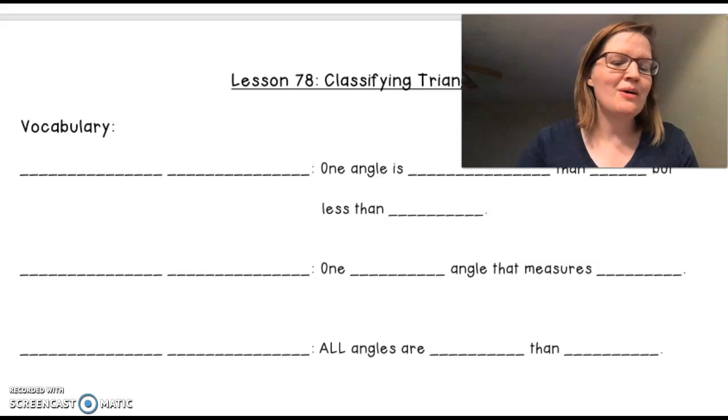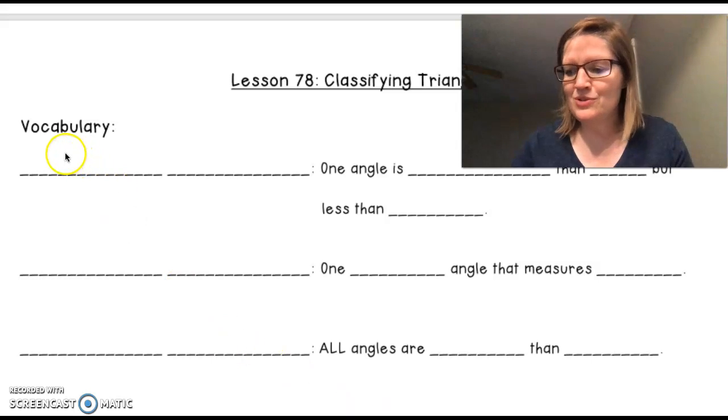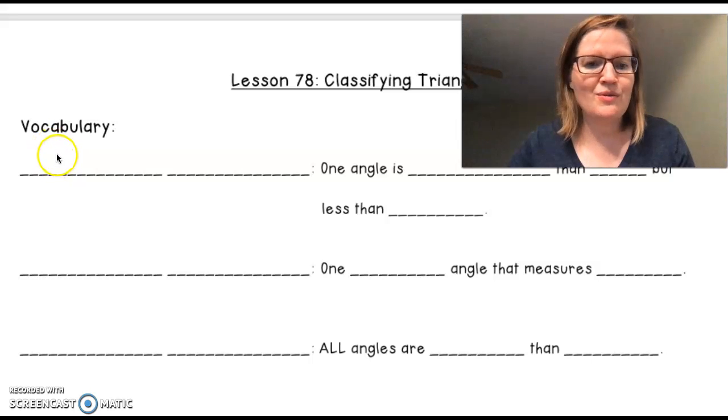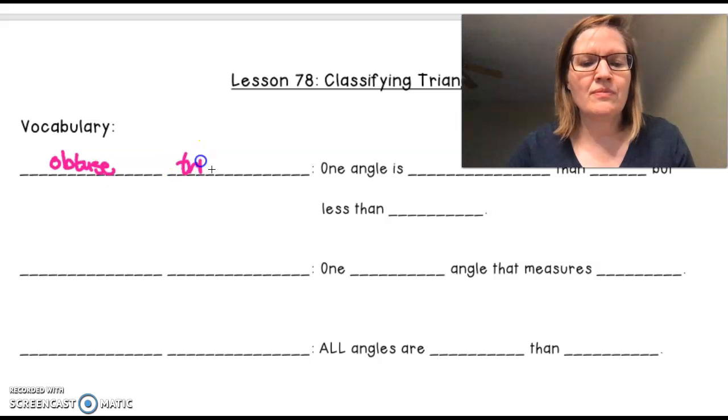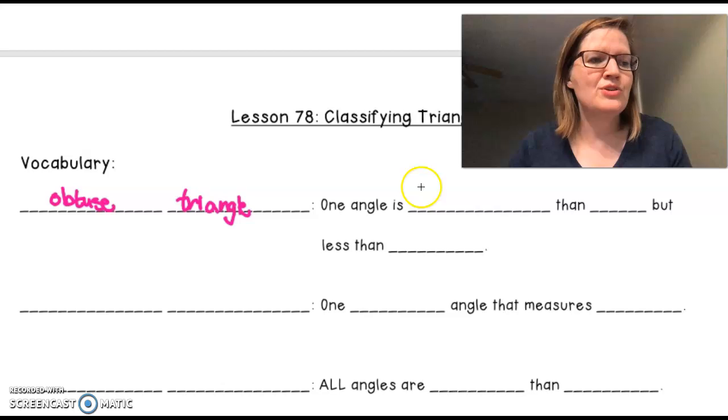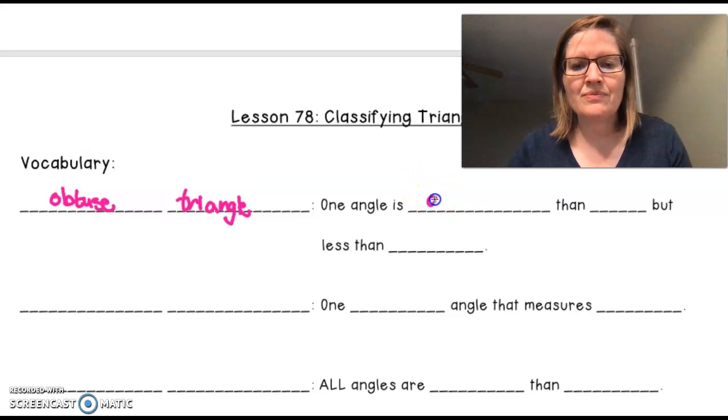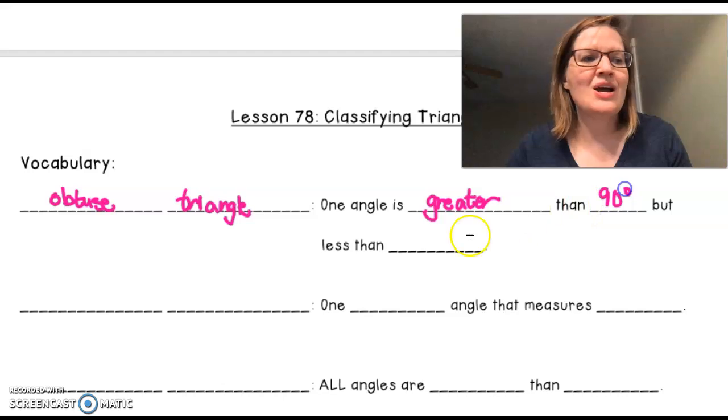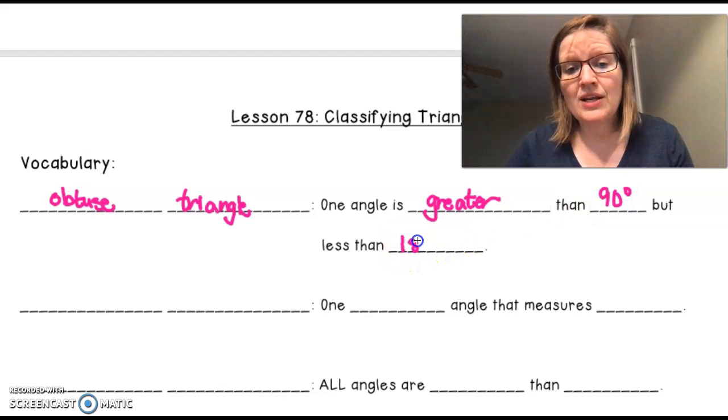So we're going to talk about our first one, obtuse triangle. Now we know what obtuse means. I'm going to write this down. An obtuse triangle. This is one angle is greater than 90 degrees, but less than 180 degrees.